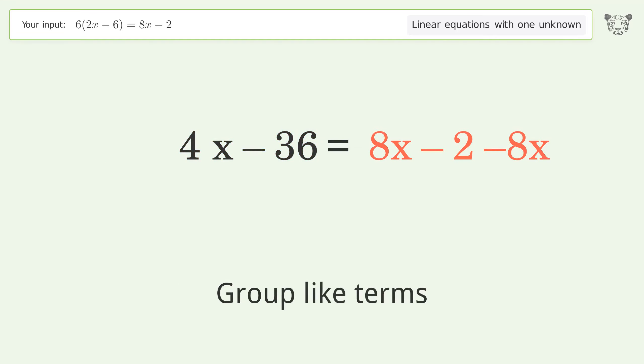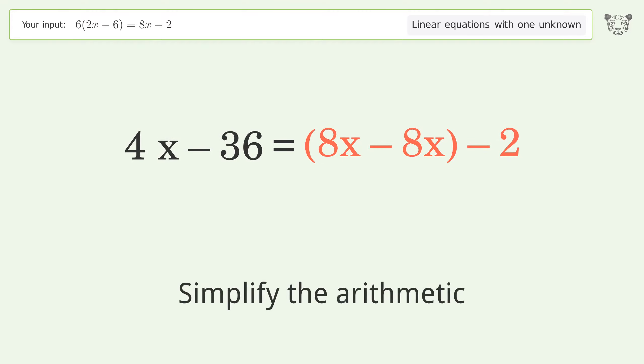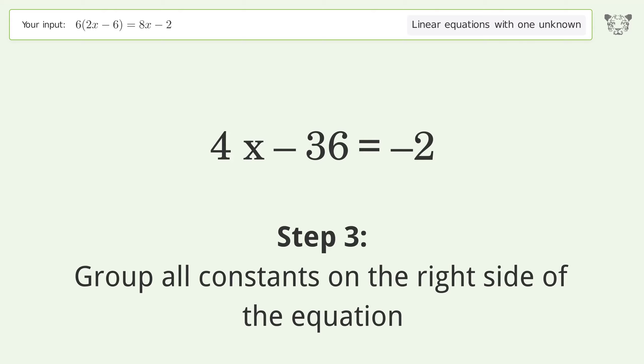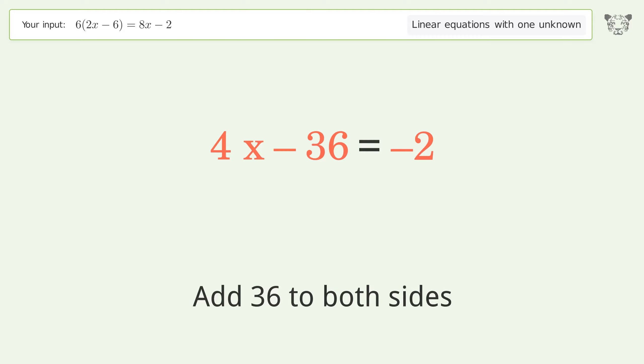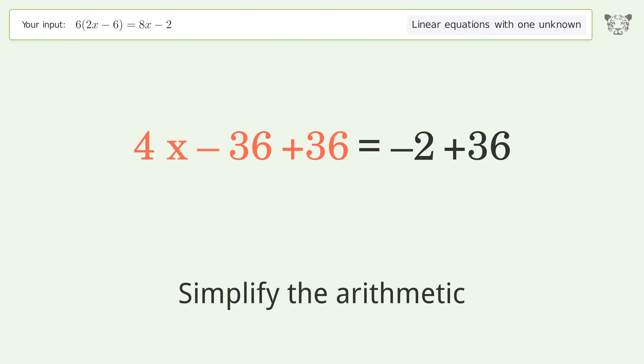Group like terms. Simplify the arithmetic. Group all constants on the right side of the equation by adding 36 to both sides. Simplify the arithmetic.